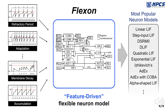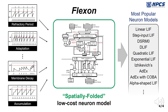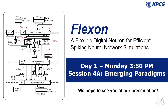To address the challenges, we propose Flexon. First, Flexon achieves flexibility by combining key features extracted from various neural models. Furthermore, we can reduce the size of Flexon by specially folding the baseline architecture. Please join our talk and we hope to see you. Thank you.